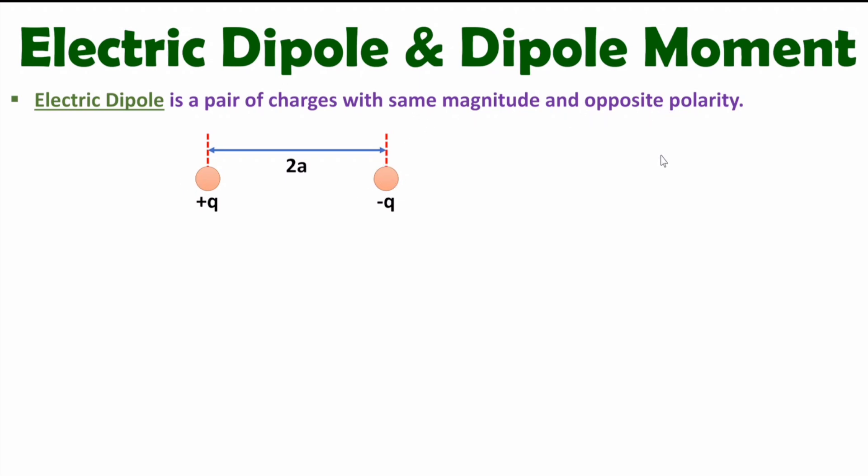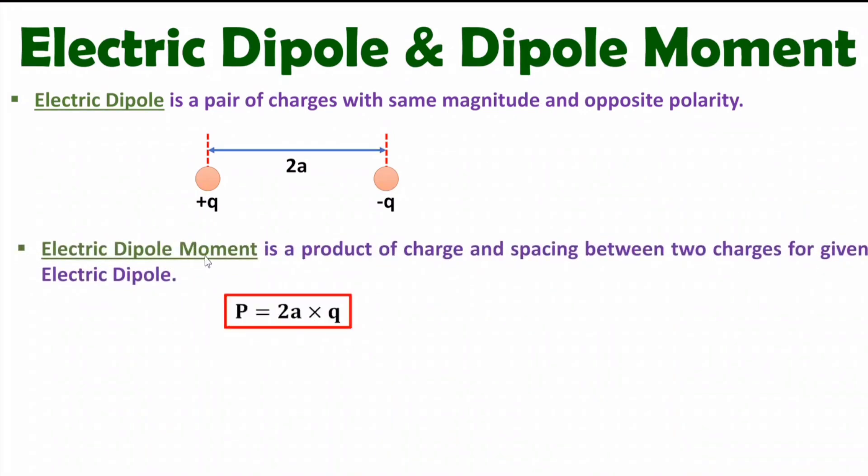Now I'll explain dipole moment of electric dipole. Dipole moment is a product of charge and spacing between two charges.